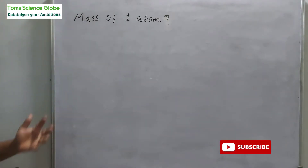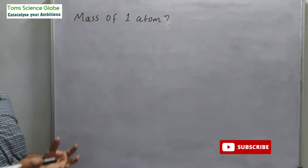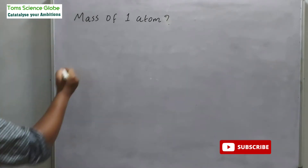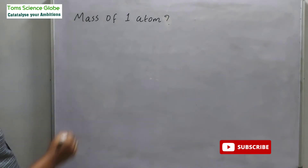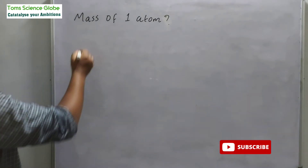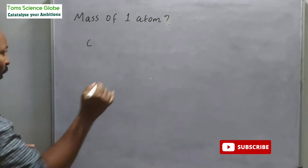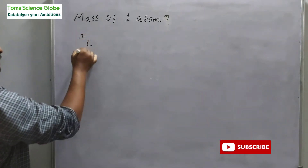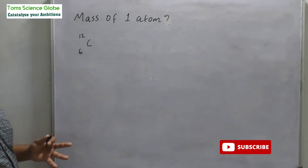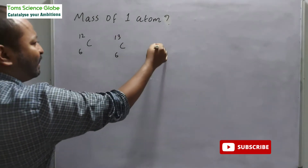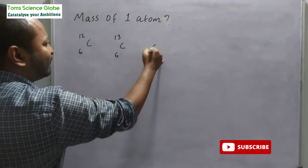If there is an atom, it will be a carbon atom. If you say carbon, you will study three isotopes from the previous section: Carbon-12, Carbon-6-13, and Carbon-6-14.